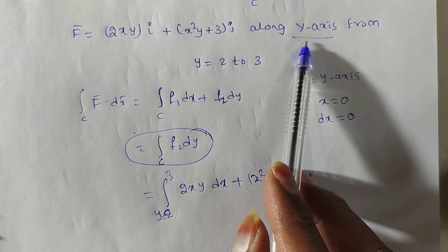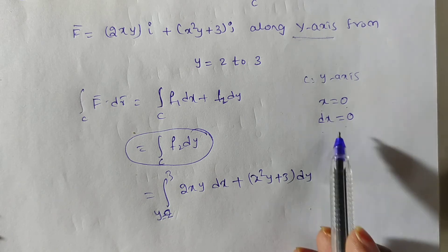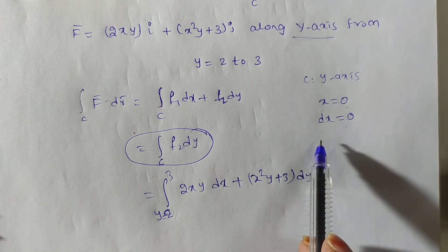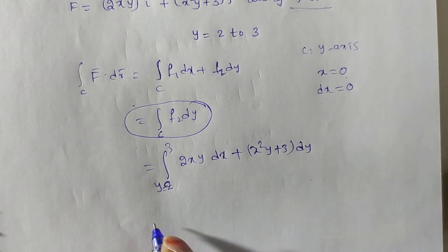Here, in this problem, they are given y-axis. Along the y-axis means x=0. Then dx is also 0 only. Independent. The rate of change is 0. Since x is a constant, you substitute these values in this.